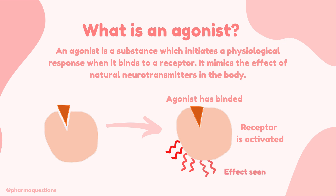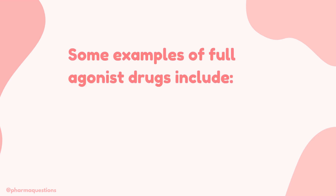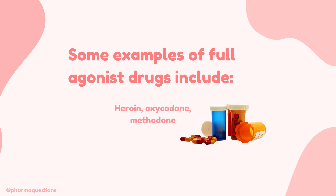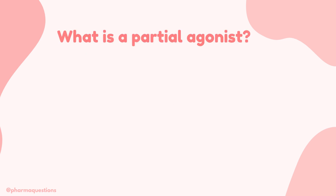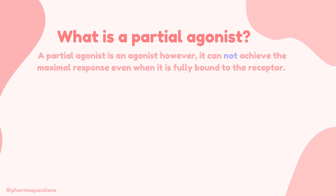Some examples of agonist drugs include heroin, oxycodone and methadone. Now let's take a look at partial agonists. A partial agonist is an agonist however it cannot achieve the maximal response that a full agonist is able to achieve.